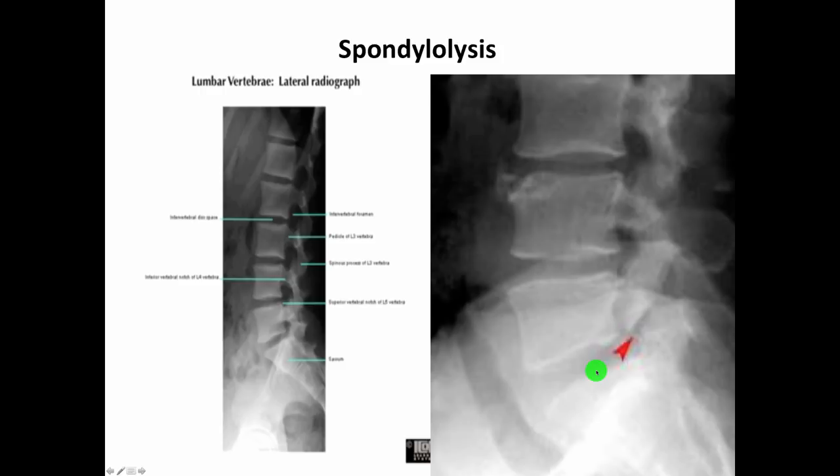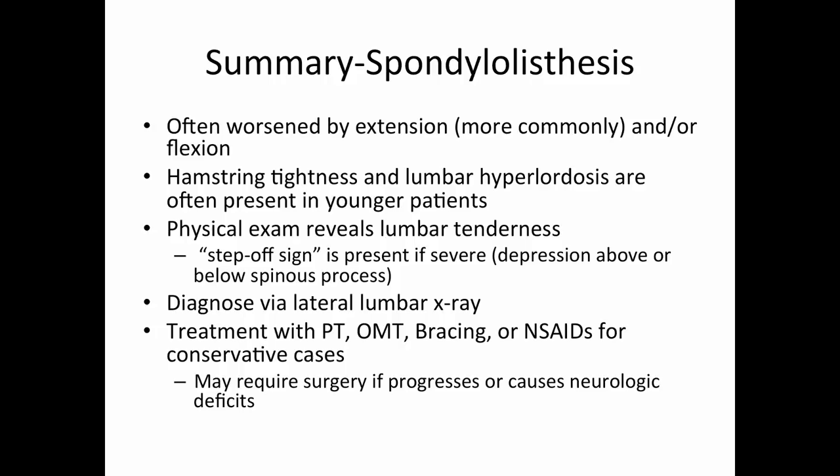Quick recap on spondylolisthesis: it's the anterior slippage and is worse with extension because that loads the vertebrae and promotes anterior motion. It's often associated with hamstring tightness and lumbar hyperlordosis, especially in younger patients. On physical exam you may note a step-off sign — a palpable depression between spinous processes. Treat conservatively with physical therapy, osteopathic manipulation, bracing, and anti-inflammatories. If there's progression or neurologic deficits, surgical stabilization is needed.